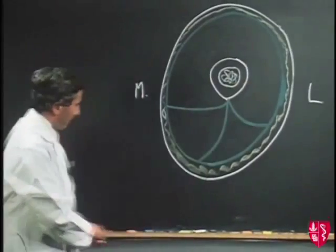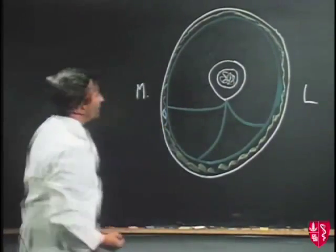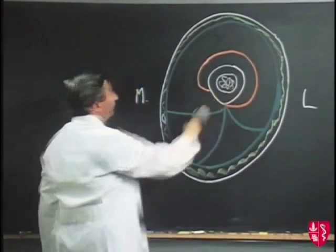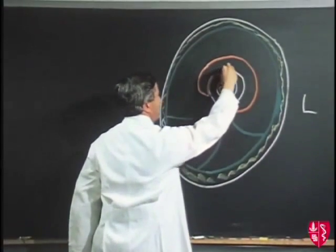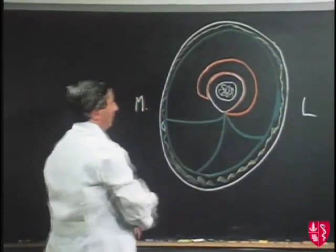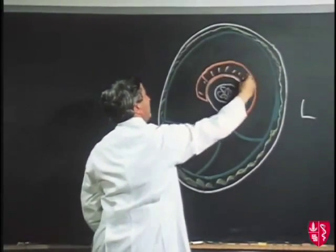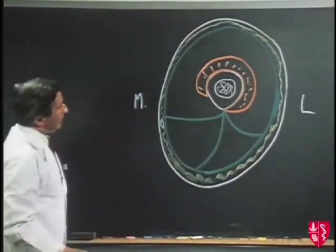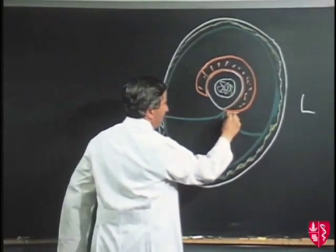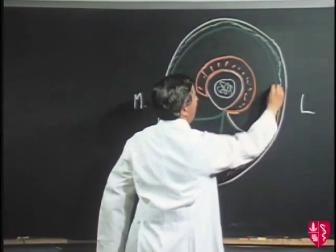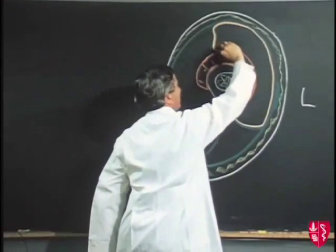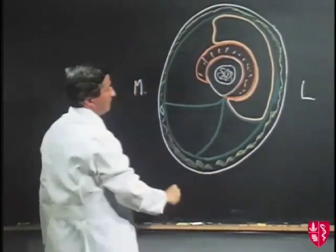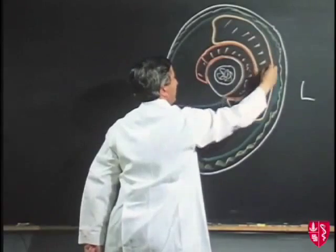Now let's start with the anterior compartment. We have arising from the anterior and lateral surfaces of the shaft of the femur the vastus intermedius muscle — here shown in cross-section, arising from the anterior and lateral surface of the shaft. Lateral to that we have a fairly large muscle, also tethered to the fascial septa and deep fascia of the thigh: the vastus lateralis, lying superficial and lateral to the vastus intermedius.